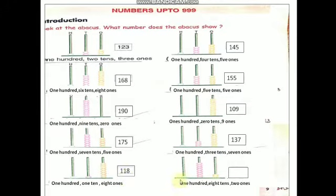Come to the next one. In the 100's place, 1 bead — so 100. In the 10's place, count children — 8 beads — so 8 tens. In the 1's place, 2 beads — so 2 ones. 100, 8 tens, 2 ones — you can write the number 182. Understood, children? Abacus — what number does the Abacus show?